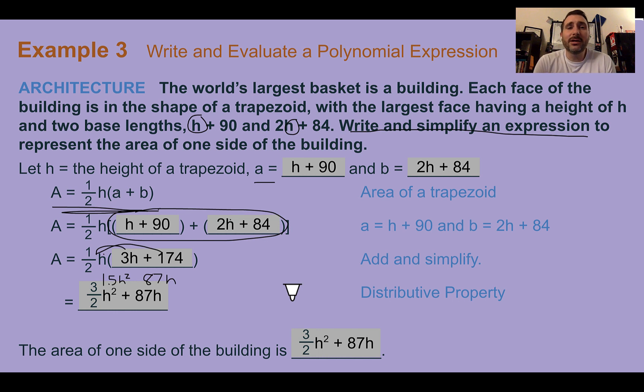So this expression here is the area for one side of the building. Now that doesn't really look like it's an area in the terms that we're used to, but we don't actually know what the height is. It tells us that the height is h. If they gave us a number for the height, then we could just plug that in and figure out the area quickly. But since they don't tell us, we gotta leave it as it is.